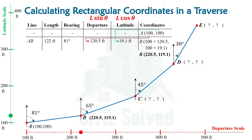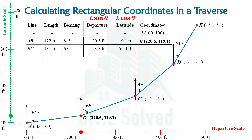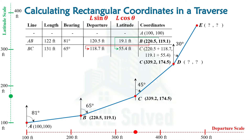In a similar way we can move forward for the calculation of point C by calculating the latitude and departure of line BC. When we do the calculation we will have the departure and latitude values. The coordinates of C point are then calculated by simply adding the departure and latitude to the coordinates of B point, and the same can be shown on the departure and latitude scale.